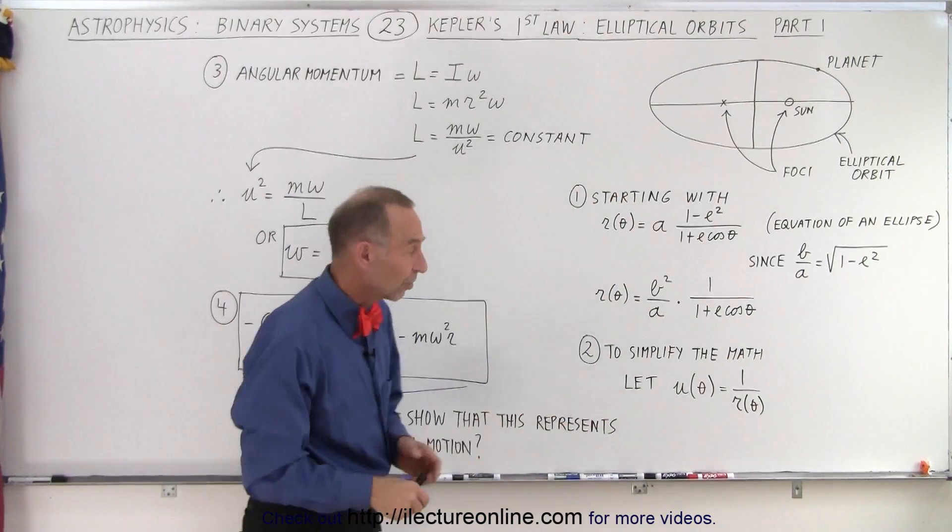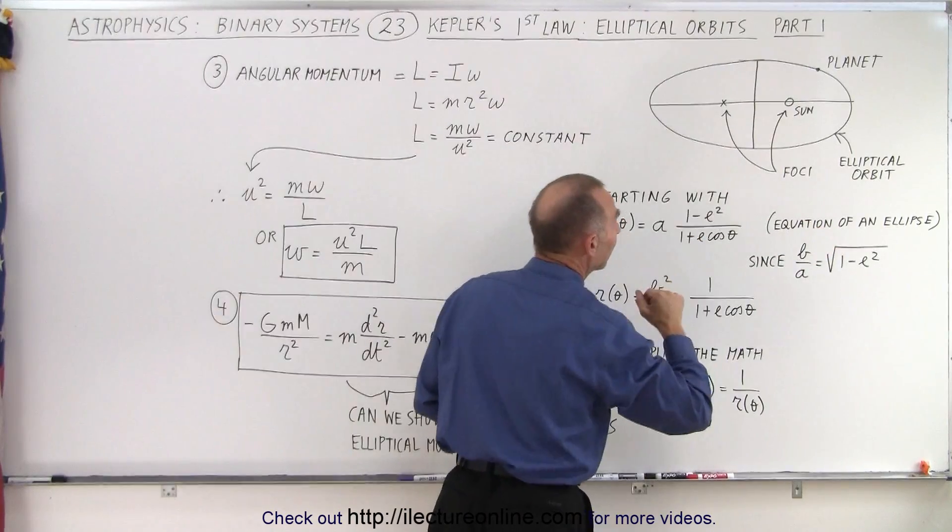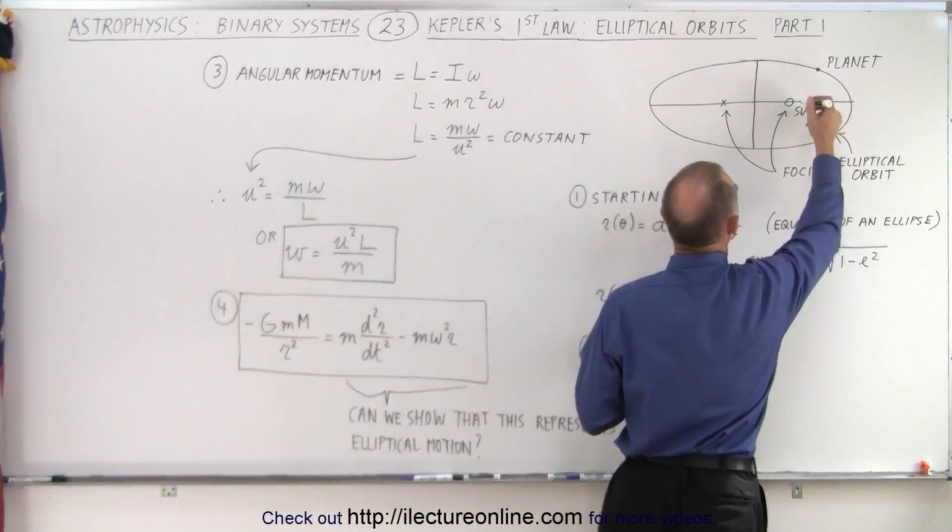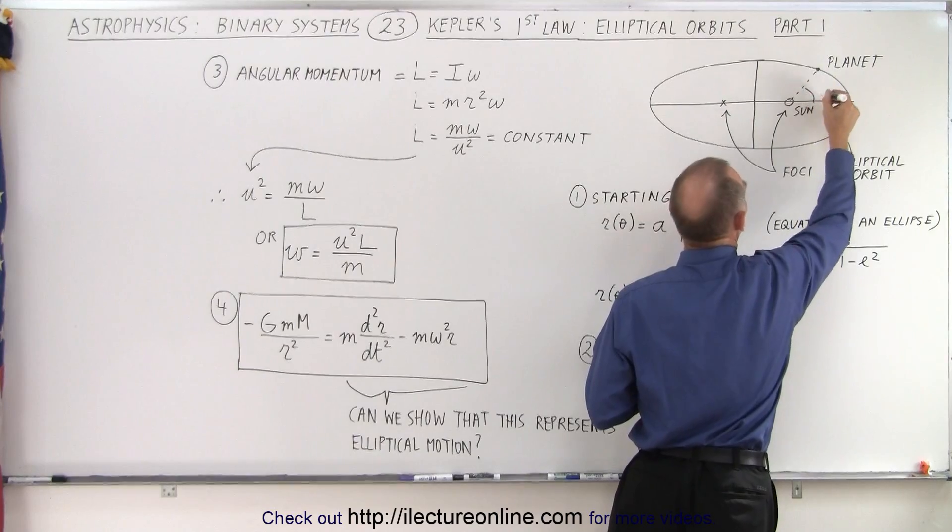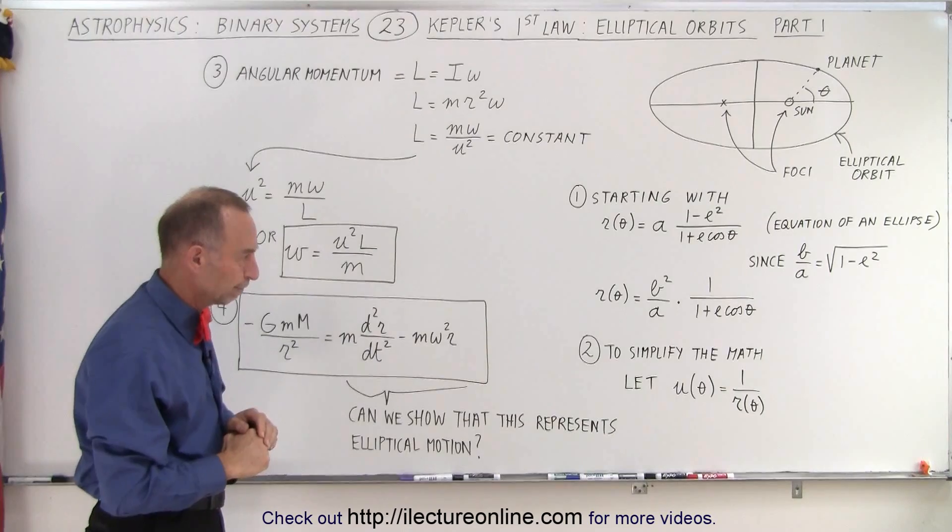E is the eccentricity and theta is the angle relative to some point in the orbit. Typically, theta is referenced to this angle here at that point in the orbit.